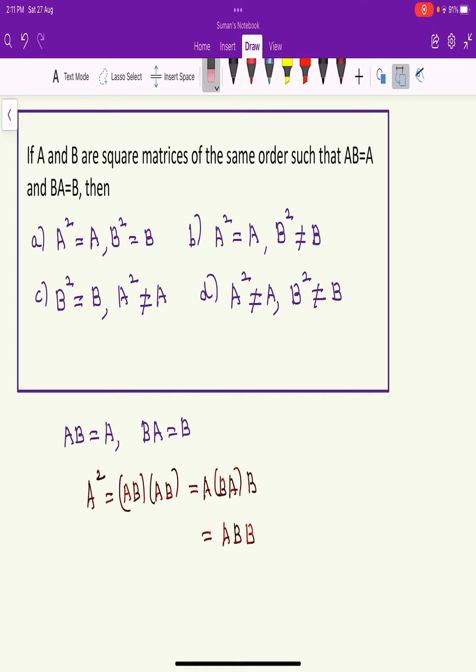Since AB equals A, A squared is AB into AB. Since matrix multiplication is associative, this is A times BA into B.